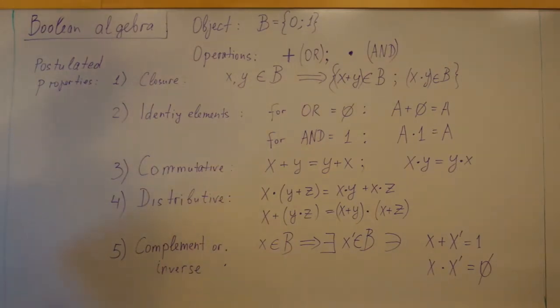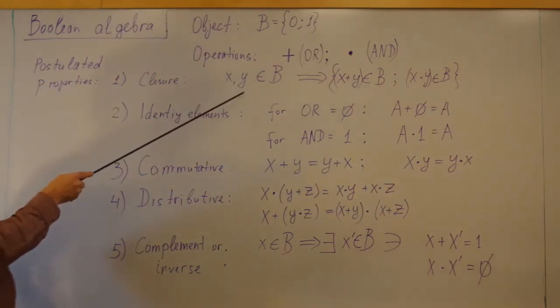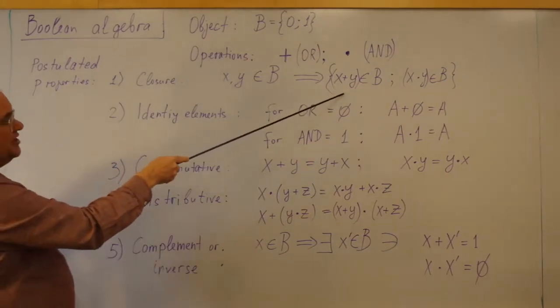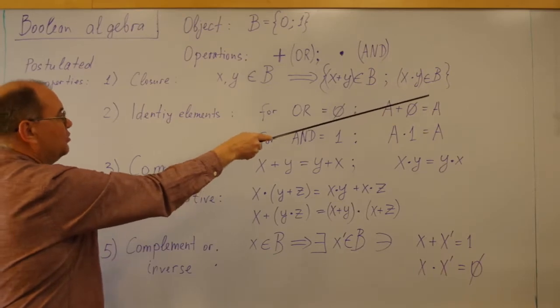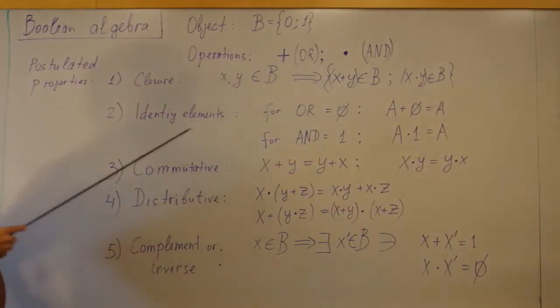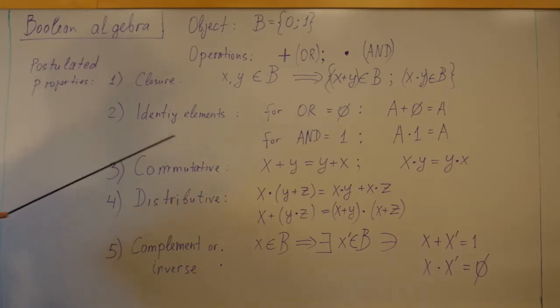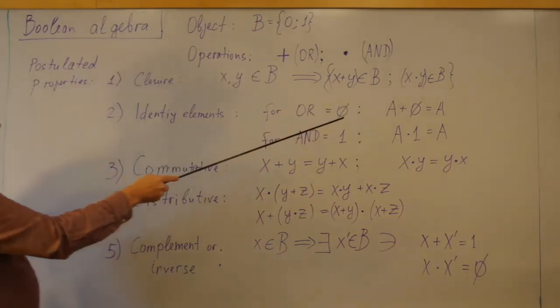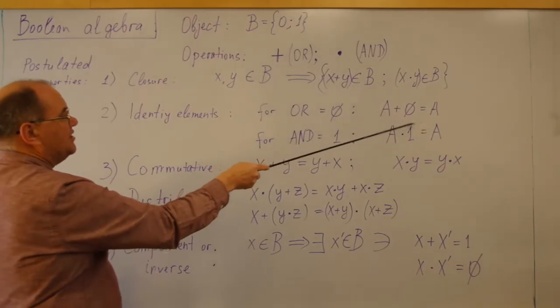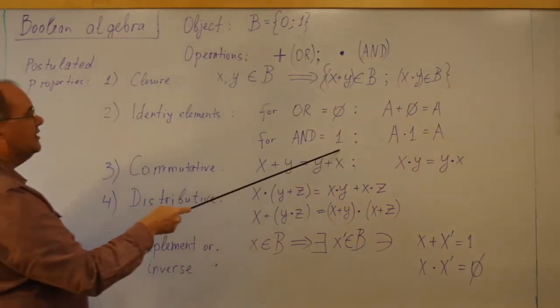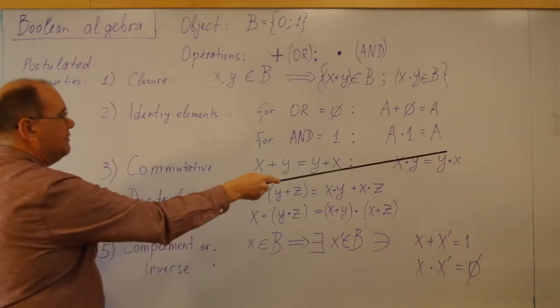These operations have following properties. First, closure: If two elements X and Y are Boolean, then their logical sum and logical product are also Boolean. Second, there are identity elements. For OR operation, identity element is 0, such that A plus 0 is the same A. For AND operation, identity element is 1. A times 1 is A.